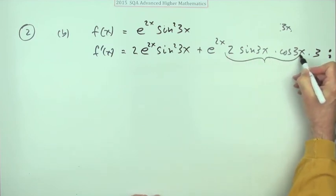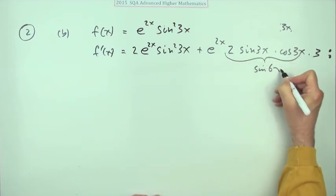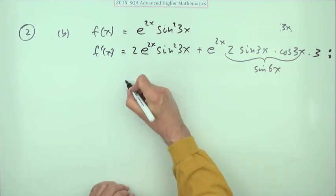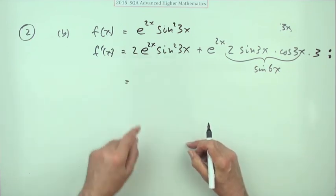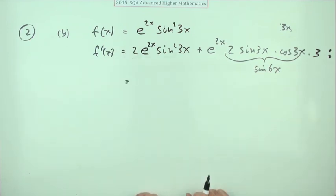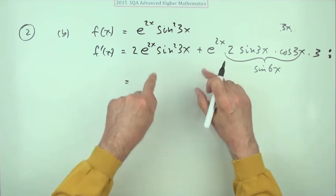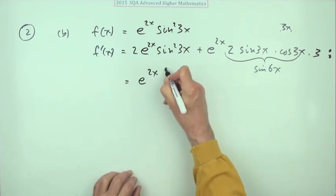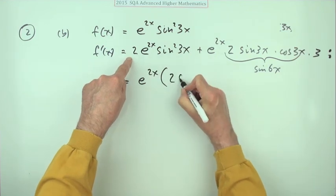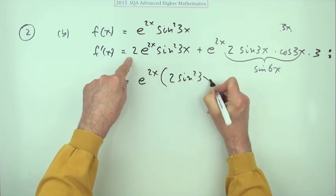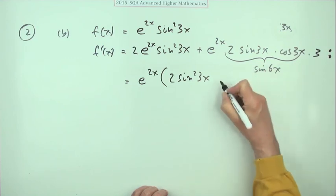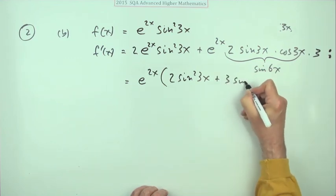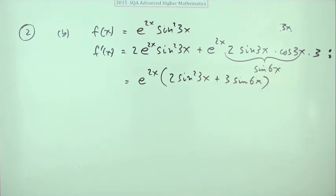Or I could interpret this part here as the sine of 6x, and then again look for my common factors. But now I've lost my 2s because I've got a 2 here and a 3 there, so the only common factor I've got is this e to the 2x, and that would come out leaving me with the 2 sine squared 3x and the 3 times sine 6x. And that would be the third mark using that route.